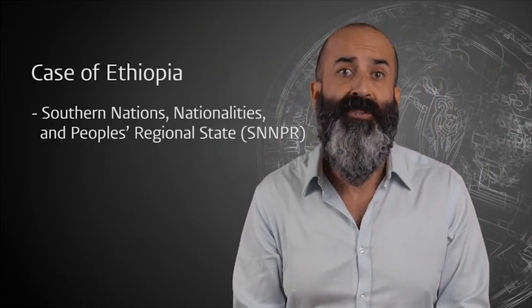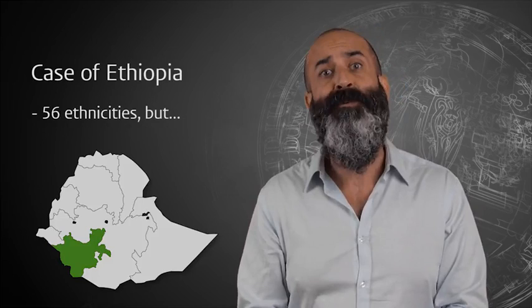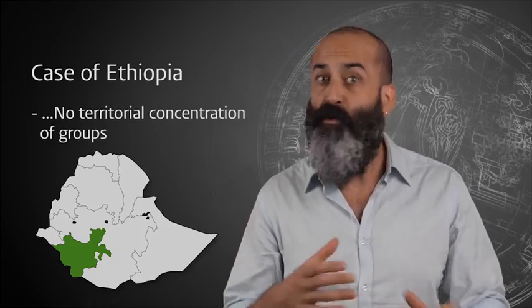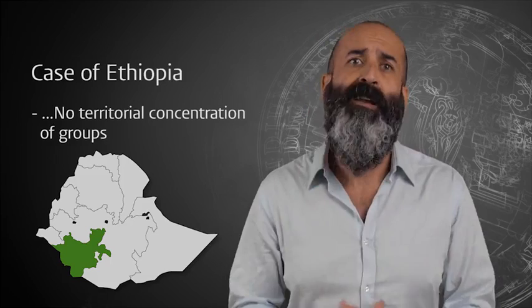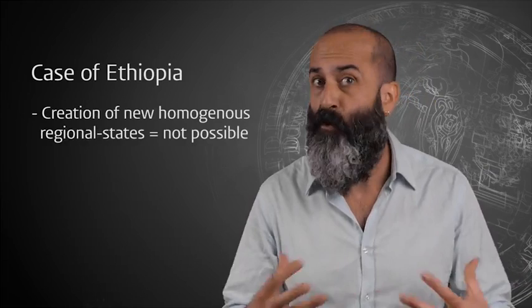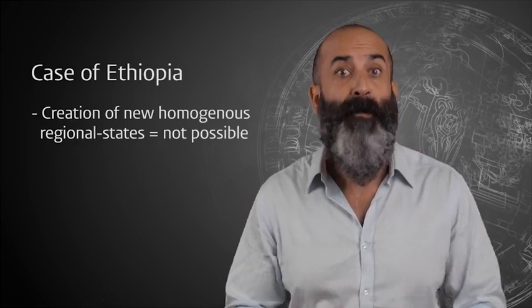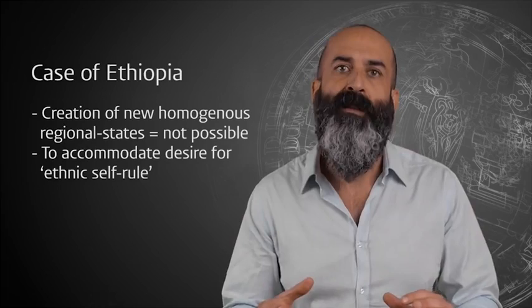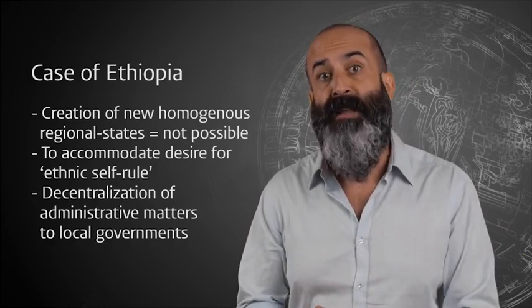One of the Ethiopian regional states is called the Southern Nations, Nationalities and People's Regional State. There are some 56 ethnic groups inhabiting this particularly diverse regional state in the south of the country. And not all of them live in geographically compact, neatly demarcated, economically viable sub-regions. They live side by side, unevenly divided across multi-ethnic regional state. Creating new regional states in a homogenous way from this geographic and demographic patchwork is not possible. But communities still demand real and symbolic self-rule.